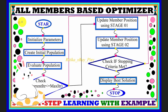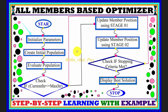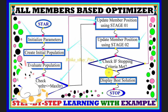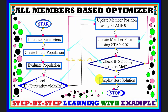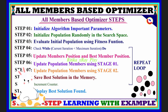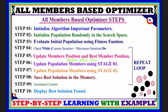The flowchart for this algorithm is: initialize parameters, create initial population, evaluate population using a fitness function, check the stopping criteria, update the population using Stage 1, then Stage 2, and check the stopping criteria again. If not met, repeat the loop; otherwise display the best solution found. That's all about this video — if you have any questions, you can comment below. Thanks for watching.